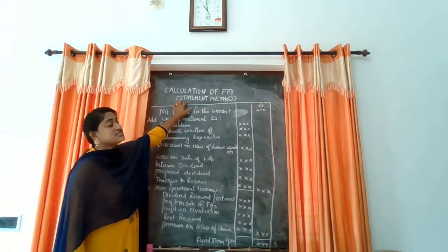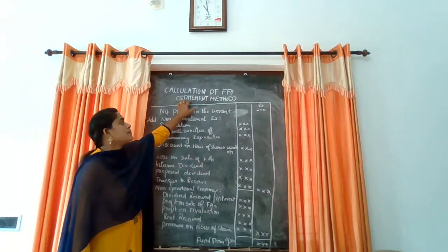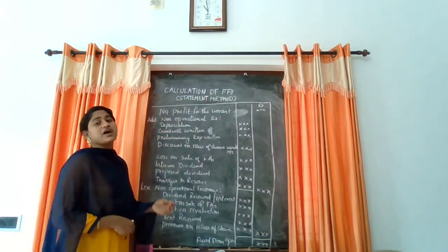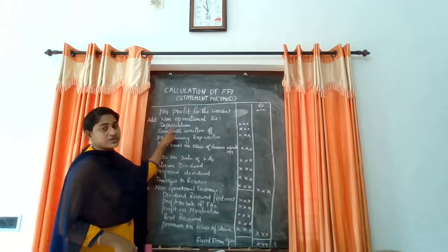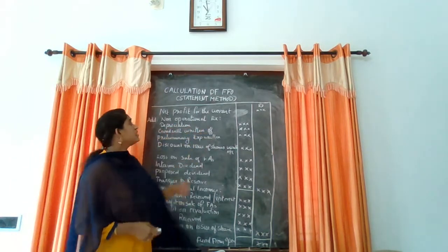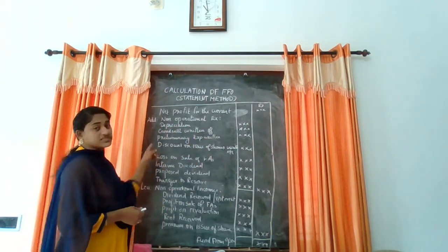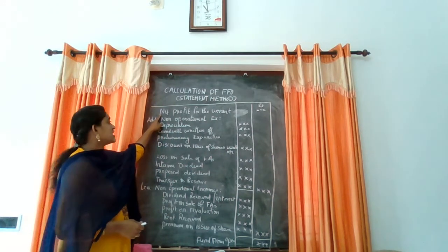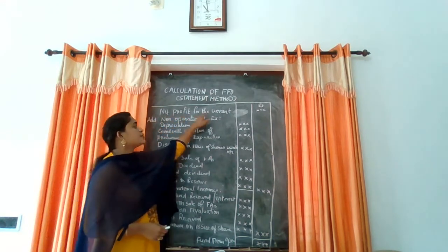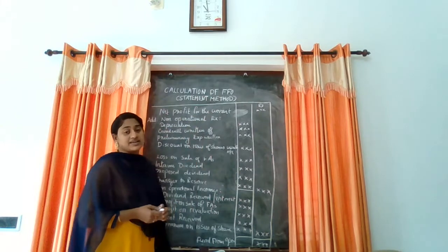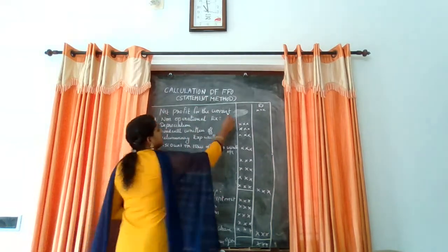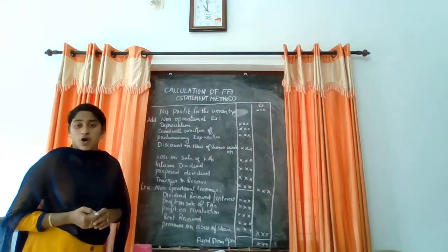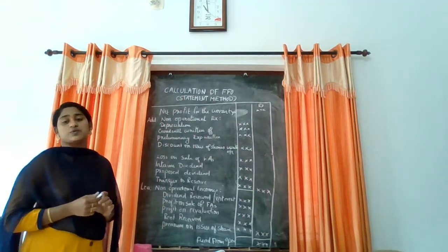Under the Statement Method, Fund from Operation can be calculated as follows. First we have to draw a statement. I have already prepared a statement. The first item in the statement is net profit for the current year.